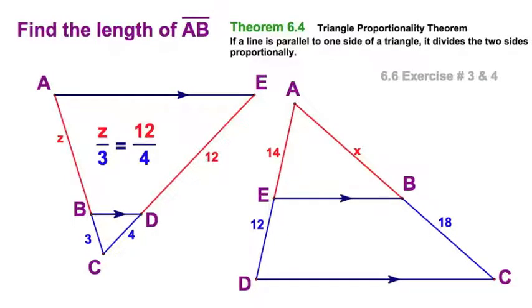Or red to the blue. Z is to 3 as 12 is to 4. Now we've so many ways to solve that, but I'll let you figure out that's 9. So your missing side is 9.